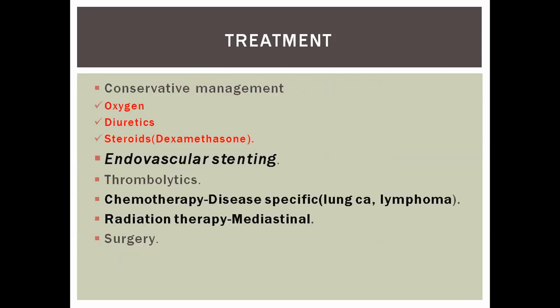Treatment: conservative supportive care with oxygen, diuretics, and steroids. Angiographic endovascular intervention (stenting) is now a key option. Previously, palliative chemotherapy was the initial approach; now we move to definitive therapy for the disease: cisplatin-etoposide for lung cancer, R-CHOP for DLBCL. Thrombolysis with tissue plasminogen activator may be used. Palliative mediastinal RT in 20 Gy in 5 fractions has been used. Surgery is the last option due to significant morbidity. Gold standard, if possible, is stenting combined with appropriate systemic therapy and supportive care.